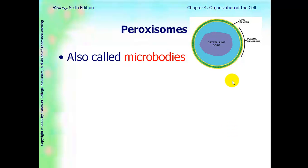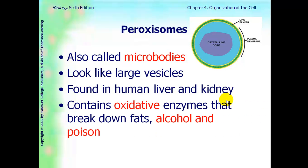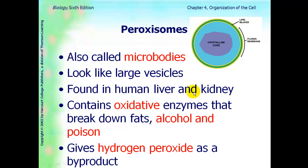The next organelle is the peroxysome. Peroxysomes are also called microbodies — they're just like large vesicles. They're found in the human liver and kidney, and they contain oxidative enzymes that break down fat. They also break down alcohol and poison. They give off hydrogen peroxide as a byproduct — that's where they get the name.